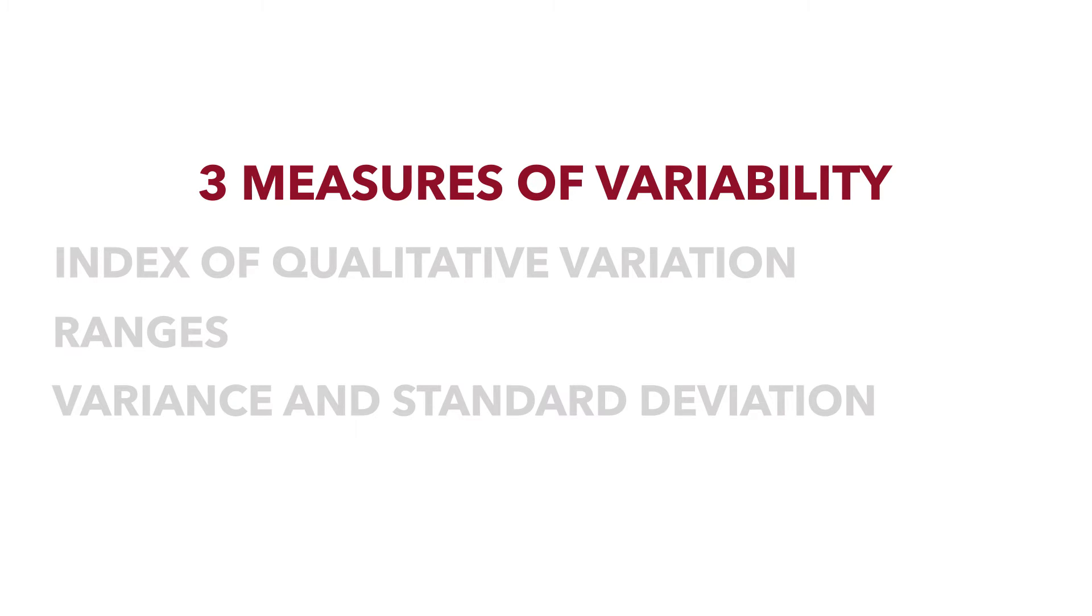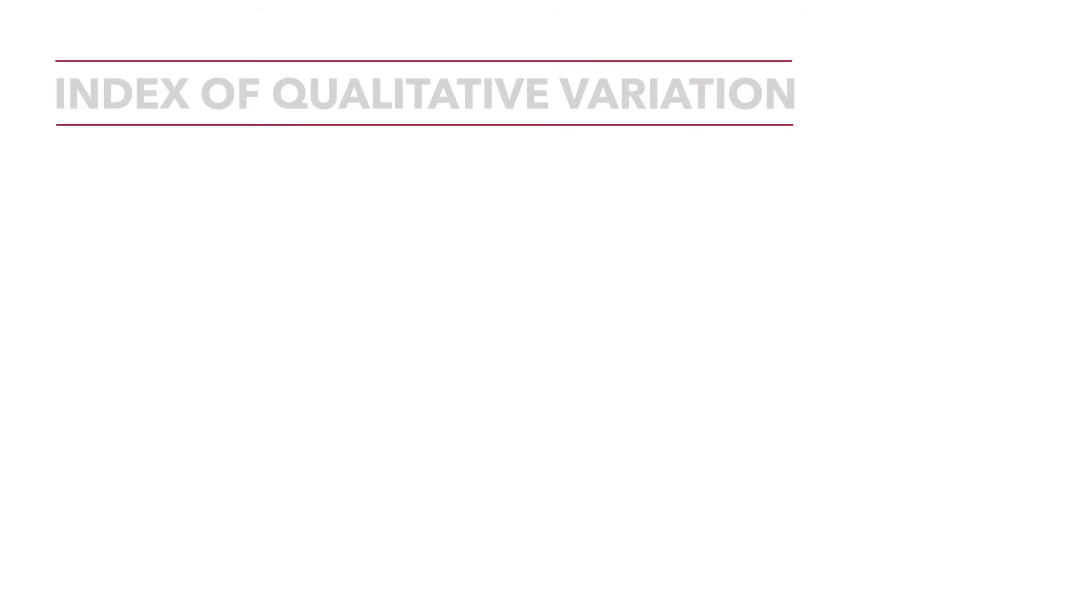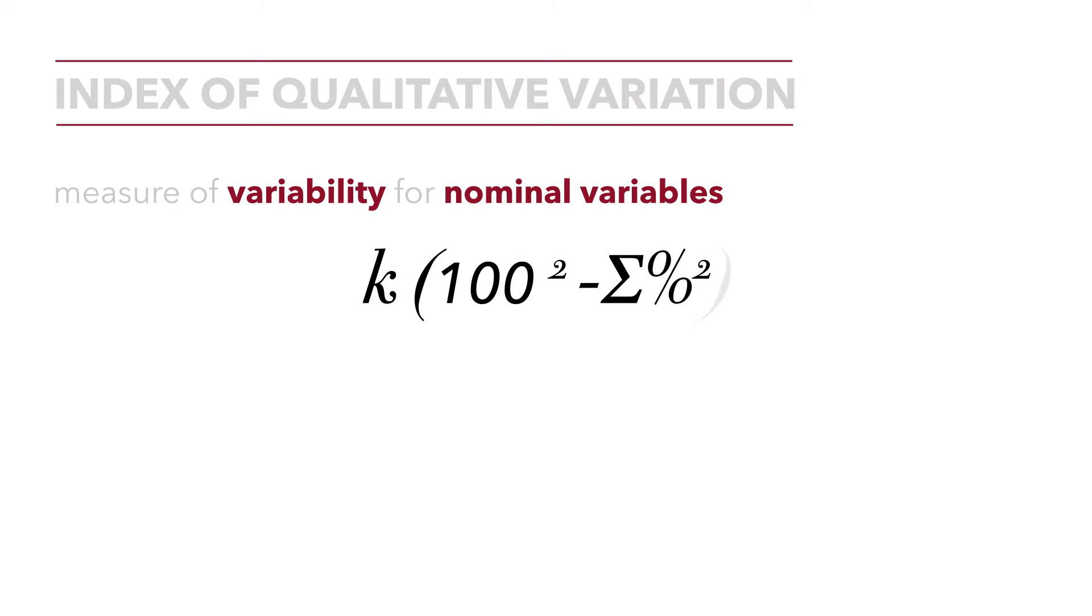In this tutorial, we will focus on the index of qualitative variation. The index of qualitative variation is a measure of variability for nominal variables. It's calculated using the formula k times 100 squared minus the sum of the percentages squared over 100 squared times k minus 1.